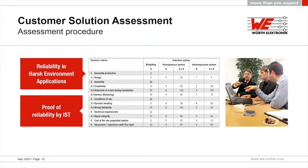Here is an example of how a customer solution assessment or benefit analysis can look. In a homogenous system, weighting is multiplied by the value assigned to each system, and at the end the totals are added up — the one with the higher number should be the better application for you.